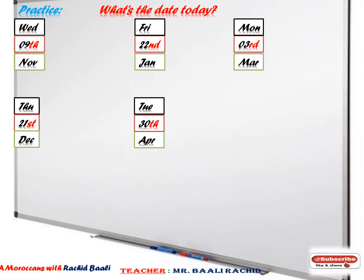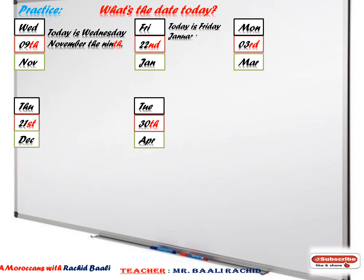Now it's your turn, guys. This is an exercise. The question is: 'What's the date today?' You hit pause, you do it, then you hit play again. Let's see the answers. Number one: 'Today is Wednesday, November the 9th.' Number two: 'Today is Friday, January the 22nd.'